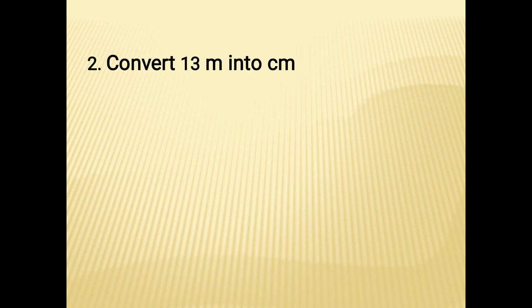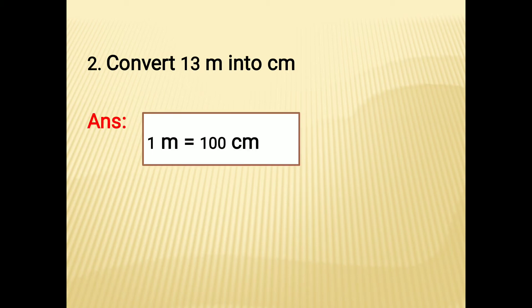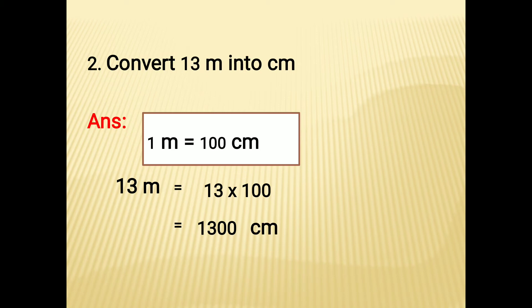Now see the second sum: convert 13 meters into centimeters. The first step — 1 meter is equal to 100 centimeters, then 13 meters equal to the same, multiply by 100. So 13 into 100 which is equal to 1300 centimeters.